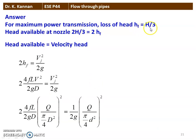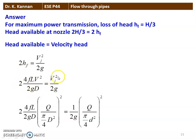For maximum power transmission, loss of head HF = H/3, where H is the total head. Head available for the nozzle = 2H/3 = 2HF. So 2HF = VJ²/2G. Substituting HF = 4FLV²/2GD: 2 × 4FL/2GD × V² = VJ²/2G. Velocity V = Q/(π/4·D²) and velocity of the jet VJ = Q/(π/4·d²), where capital D is the pipe diameter and small d is the nozzle diameter.